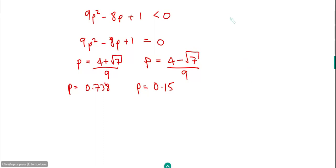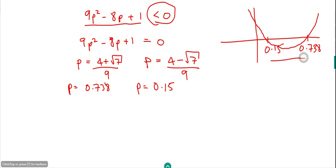So if we were to sketch this curve, this function of P, then what we would get would be that it would cross at these two points. So we get that it would cross at 0.15 and also cross at 0.738. And it would look like the standard quadratic graph. It would look like that. And we're interested in the bit where it's less than 0. So we're interested in the bit in this range, between 0.15 and 0.738, because that goes below the x-axis there.